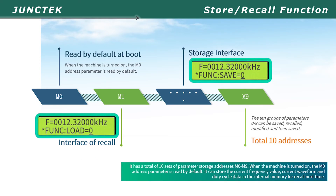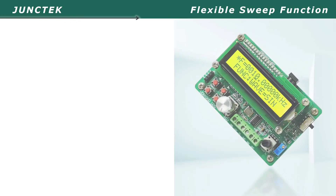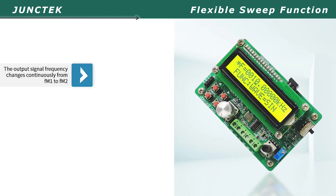It has a store and recall function with a total of 10 sets of parameter storage addresses, M0 through M9. When the machine is turned on, the M0 address parameter is read by default. It can store the current frequency value, waveform, and duty cycle data in internal memory for recall next time.